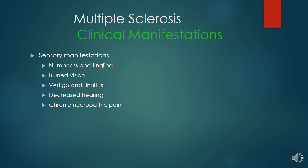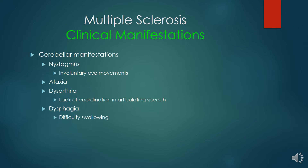Sensory manifestations include numbness and tingling, blurred vision, vertigo, tinnitus, decreased hearing, and chronic neuropathic pain. Cerebellar manifestations include nystagmus, involuntary eye movement, ataxia, dysarthria, lack of coordination in articulating speech, dysphagia and difficulty in swallowing.